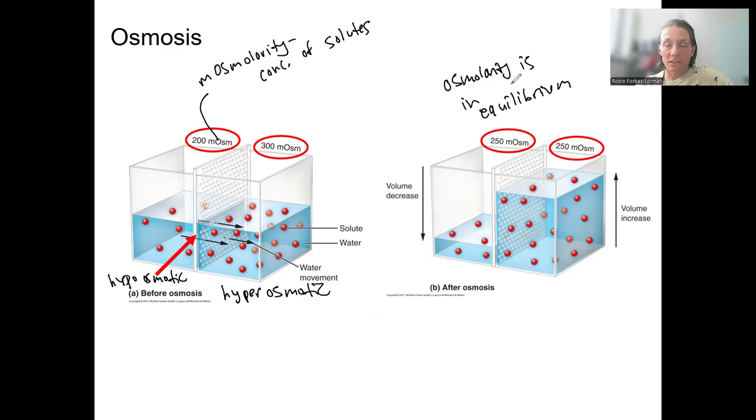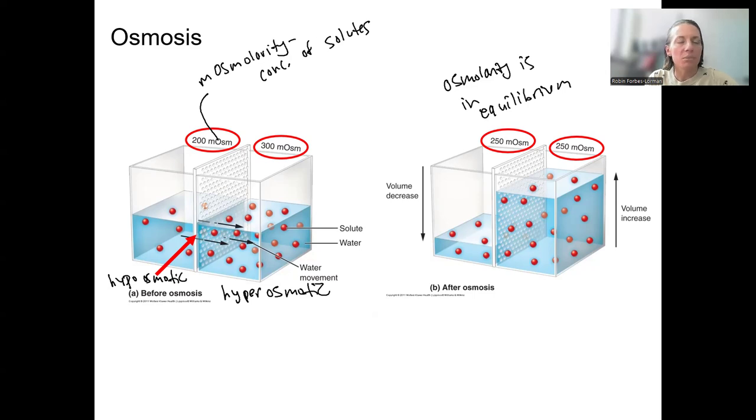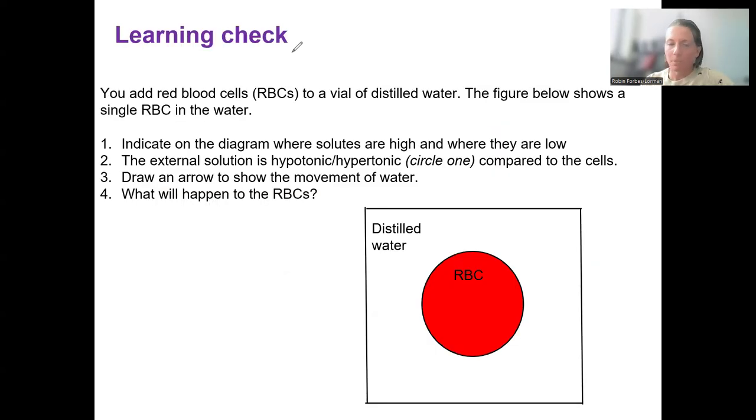We're also, when we get to cells, which is right now, we're going to talk about tonicity. Tonicity is not the same thing as osmolarity, but we're going to use it when we're talking about cells. So do this learning check. And when you see tonic here, that's pretty much similar to osmotic. It's just applying to cells, which do have variable permeability due to their membrane proteins.